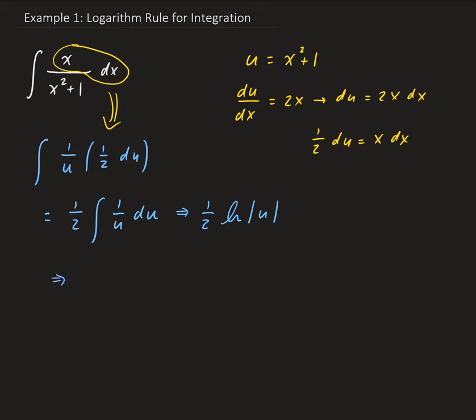So then we go ahead and replace u with x squared plus 1. So we have 1 half times the natural log of x squared plus 1 plus constant. So this is the result of our integral.